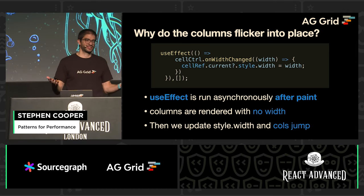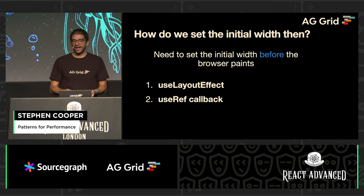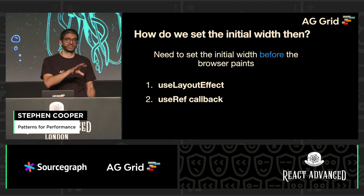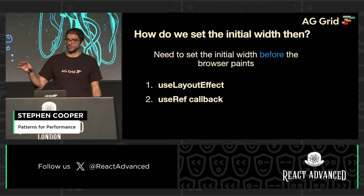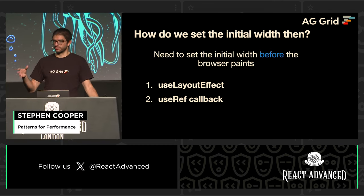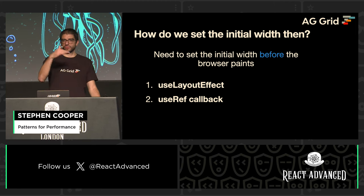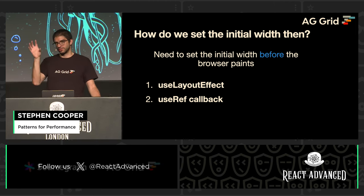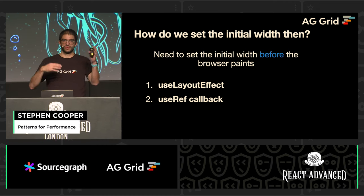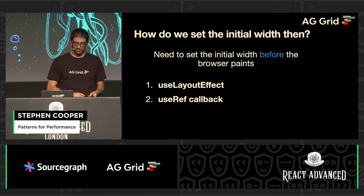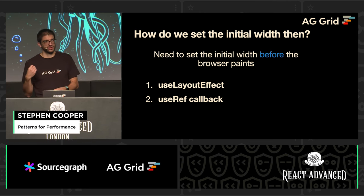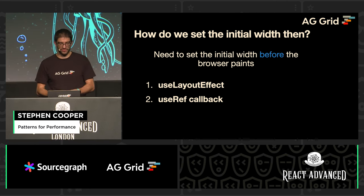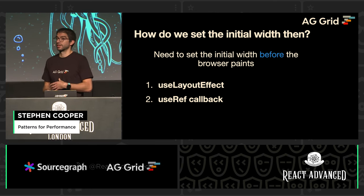We don't want this, because this is even worse. So how can we set this initial width? You can't just put it in state and then have your direct style manipulation, because the next time it renders, whatever was in the state value is going to override what you've done. We've got two alternative approaches: the first is useLayoutEffect, and the second is using a useRef as a callback.